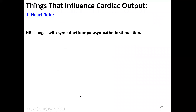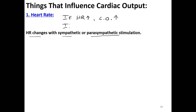Heart rate changes with sympathetic or parasympathetic regulation — one makes it go up, one makes it go down. If heart rate increases, cardiac output increases. If heart rate goes down, cardiac output goes down. The heart is not going to work any harder than it has to — it just keeps pace with the demands on the body.